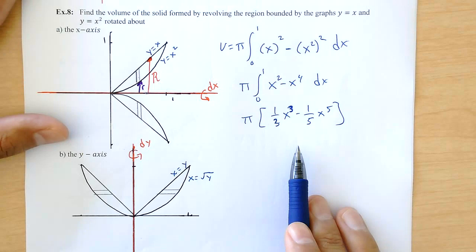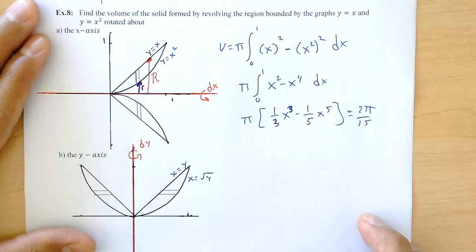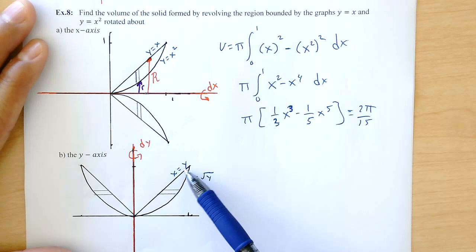So verify that, make sure we're okay, and we should end up with 2π over 15. I want you to look at Part B because now we're rotating about the y-axis and everything about the y-axis I need to be in dy. So I already solved the equation in terms of y: x equals y, and on this one I had to take the square root of both sides so now I have x equals the square root of y.